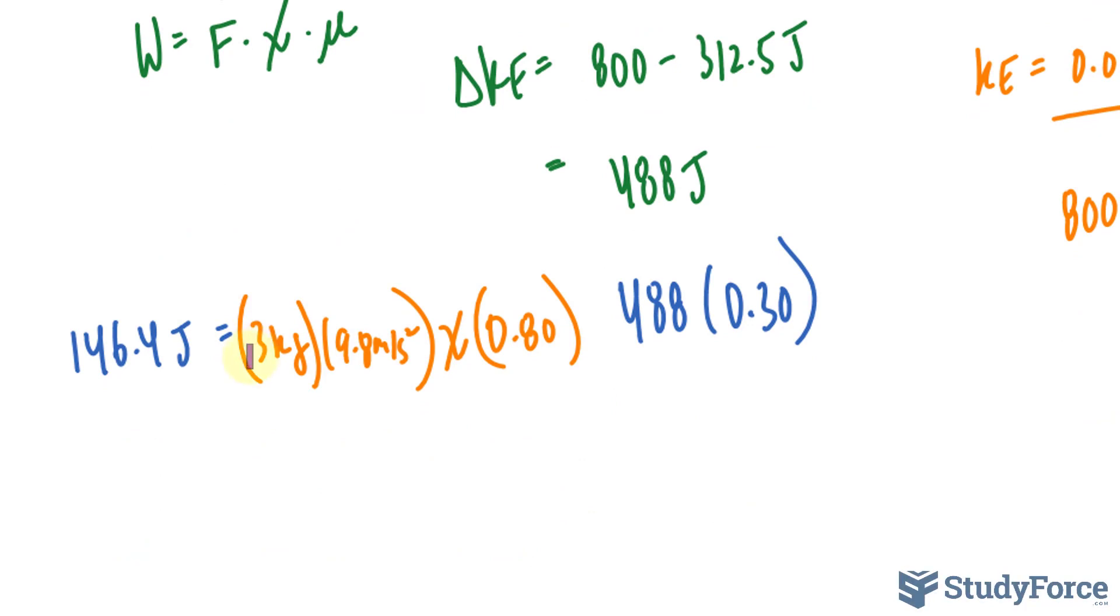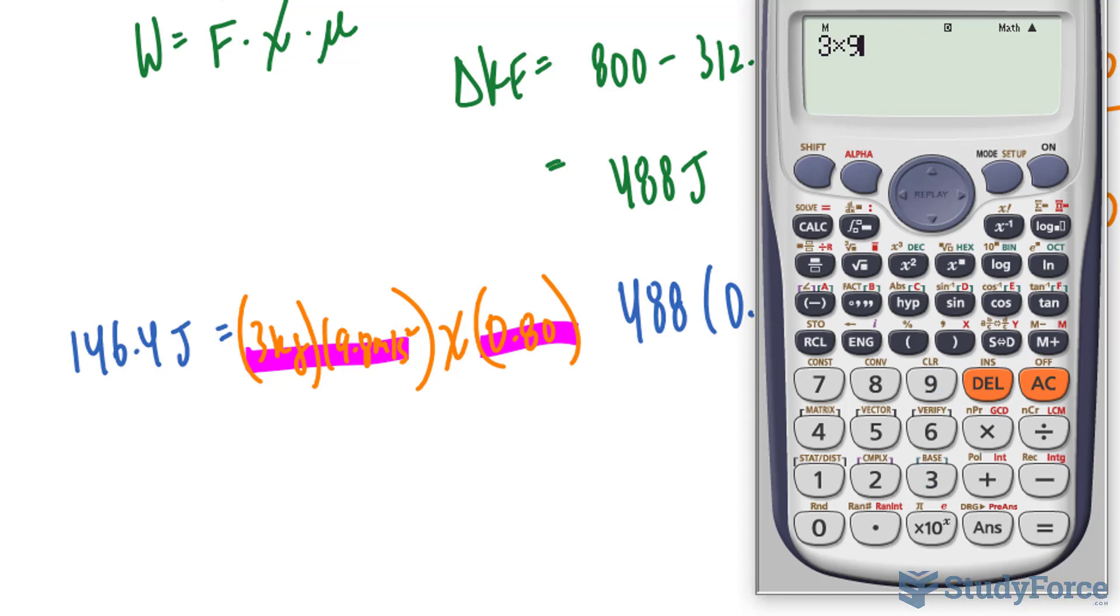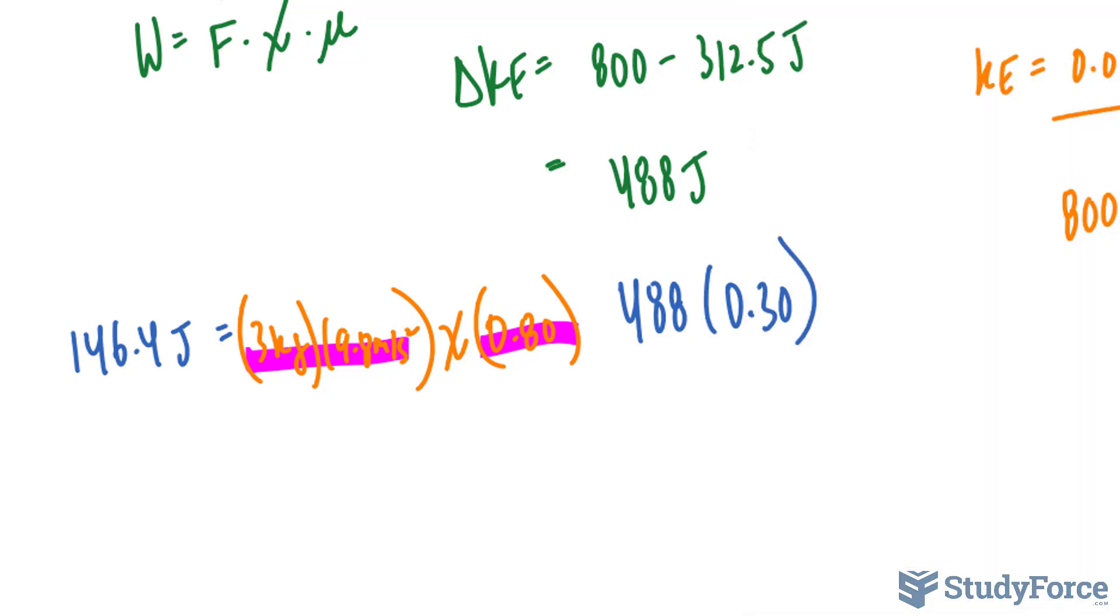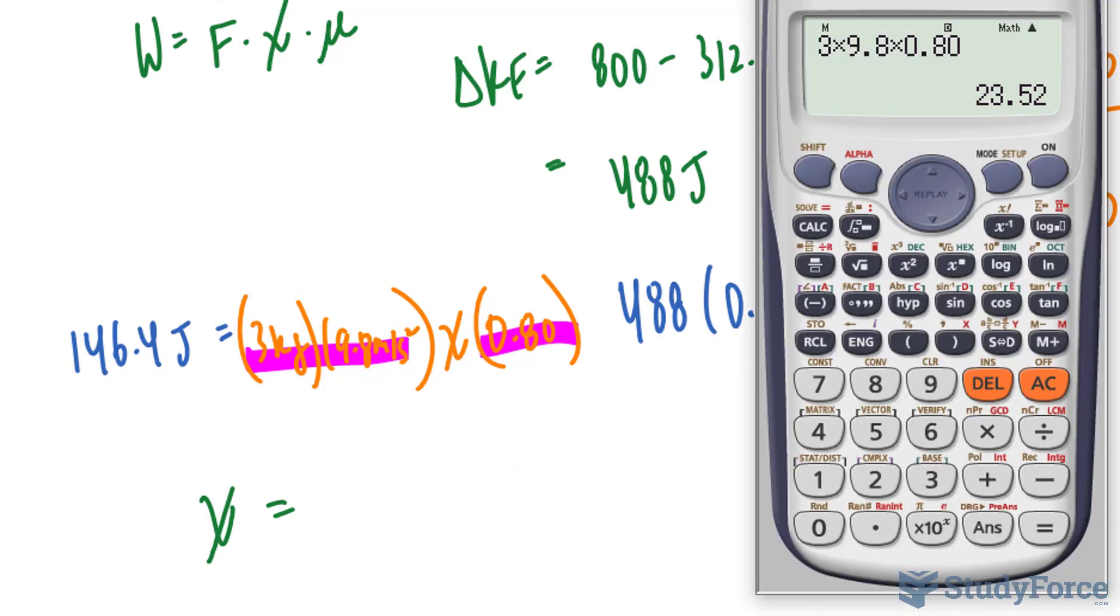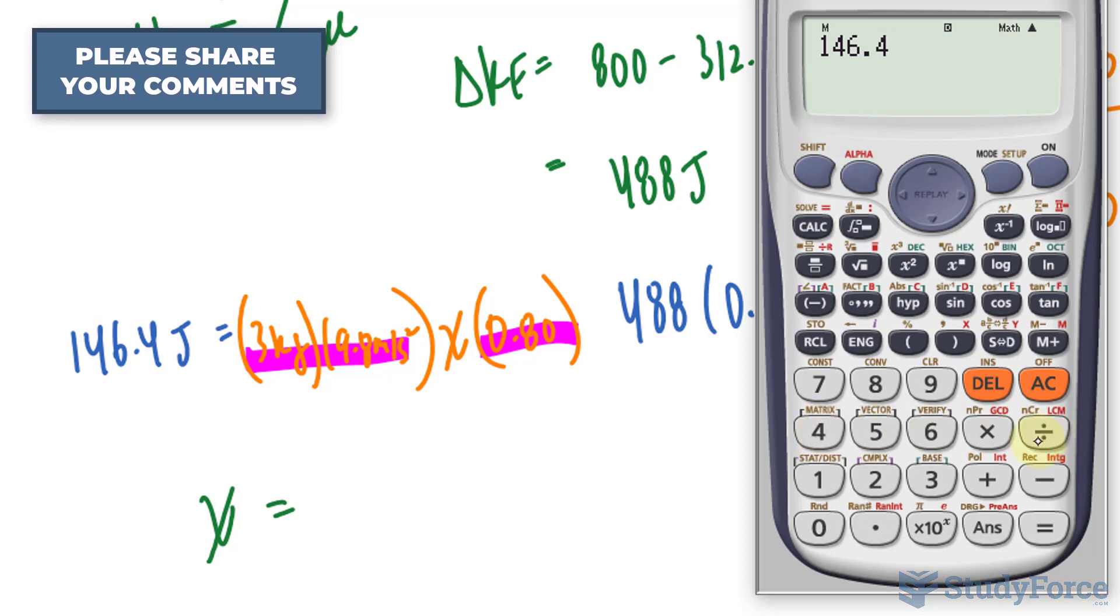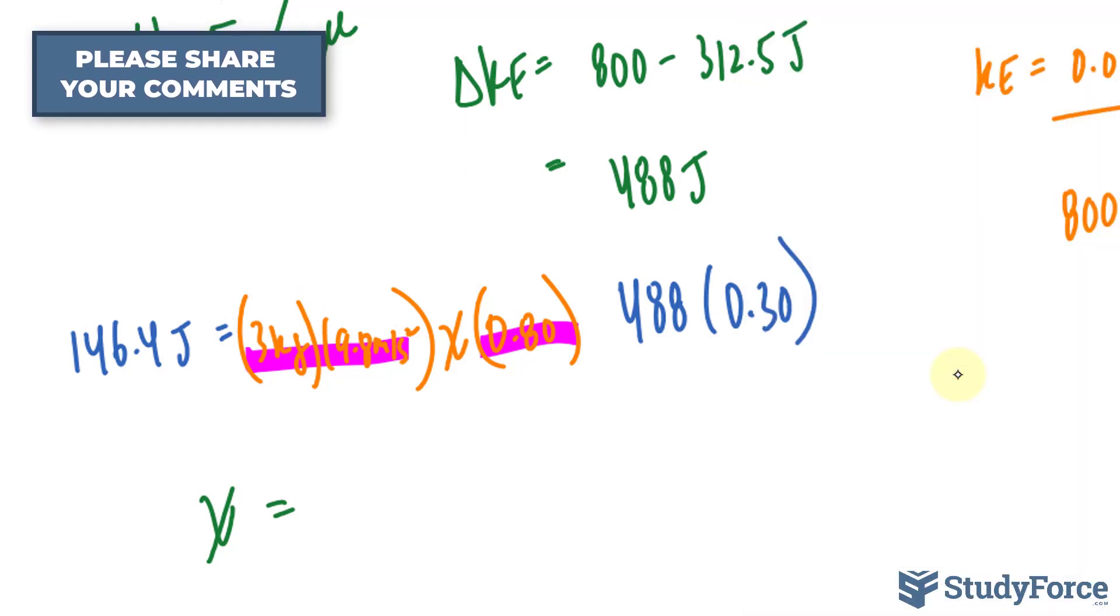I'll find out the product of 3 times 9.8 times 0.80 so that I can eventually solve for x. 3 times 9.8 times 0.80, that gives us 23.52. And I'll divide both sides by 23.52 to isolate for x. So after dividing both sides by this number, I'll take 146.4 divided by that number, and we end up with 6.2.